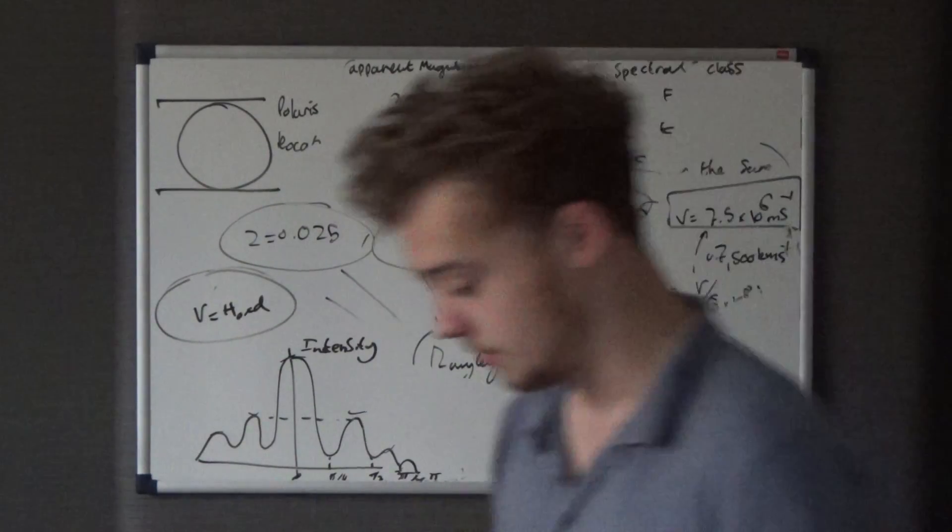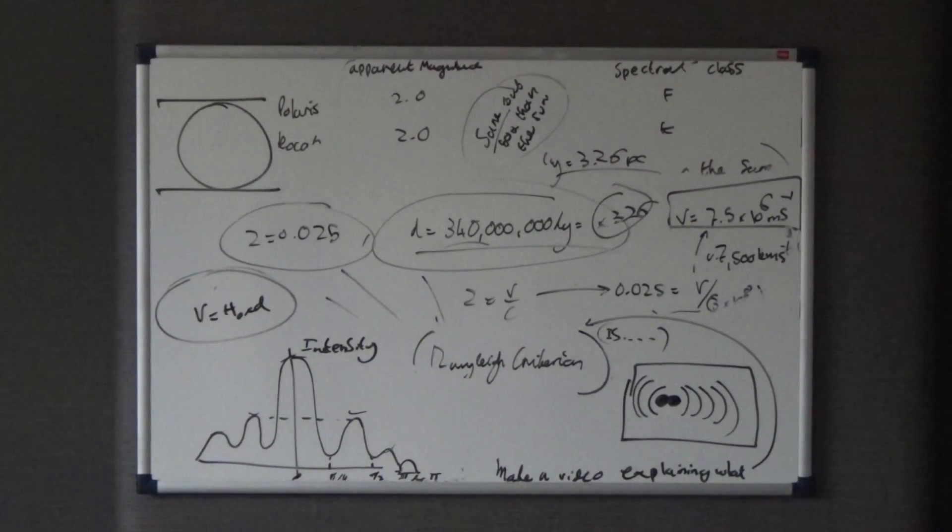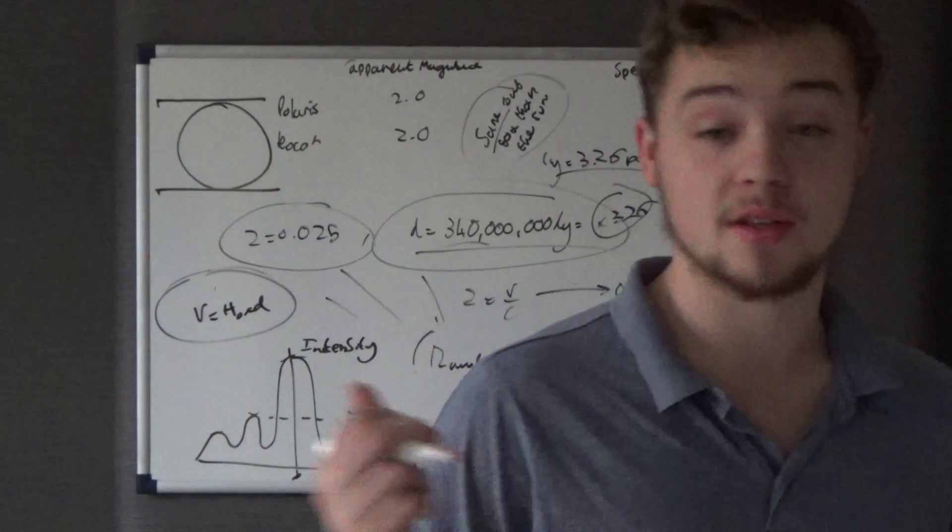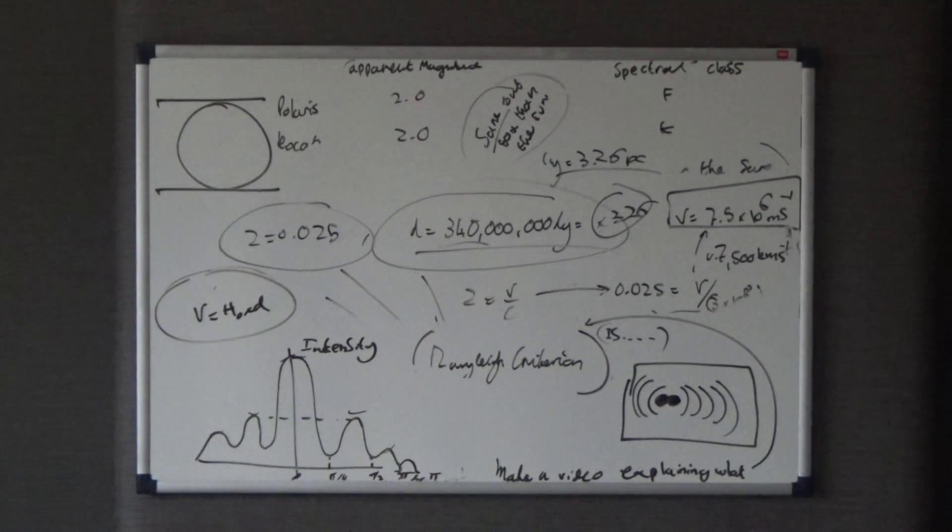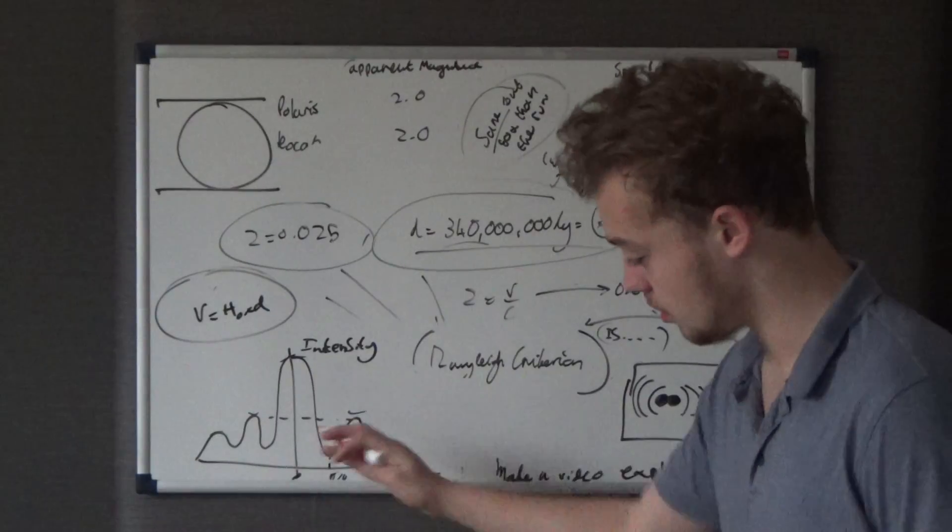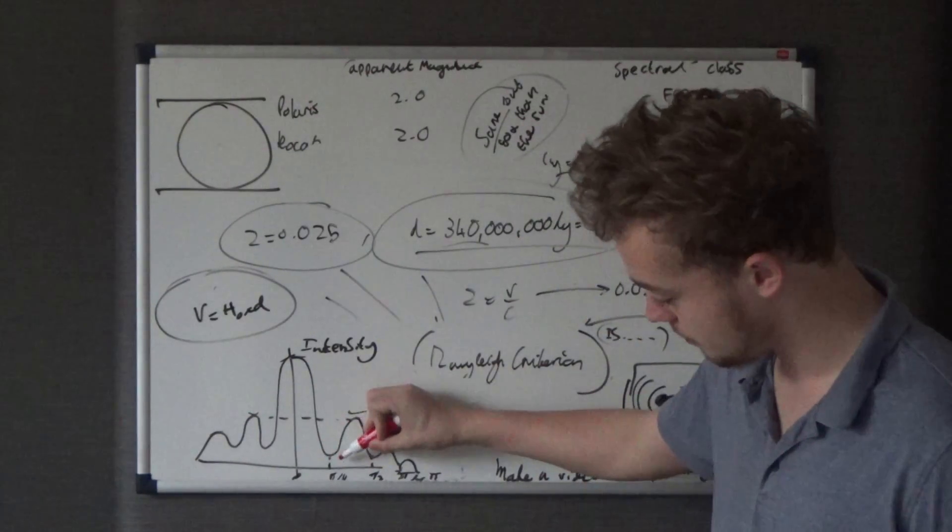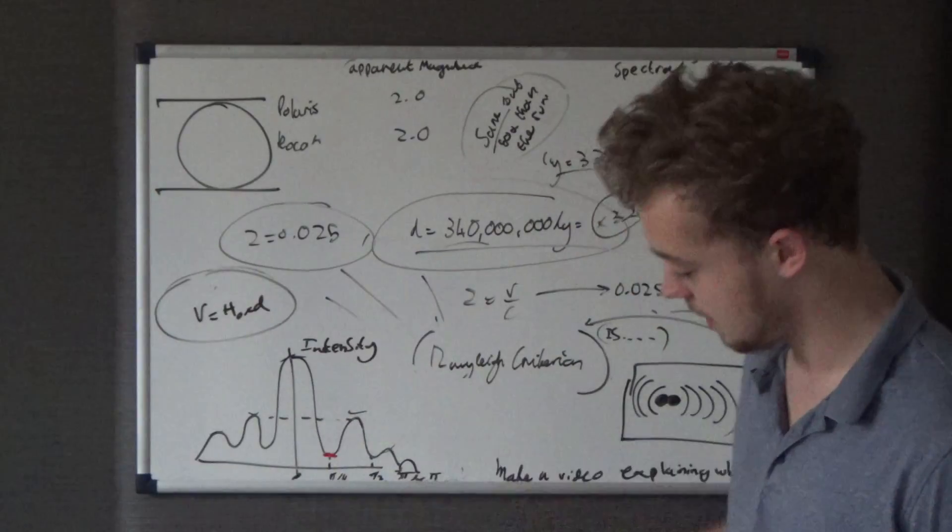So in a different colour, because I've found some colours, we'll draw what this other part of the definition says. The other part of the definition says when the central maximum of another source crosses over the first minimum of another.